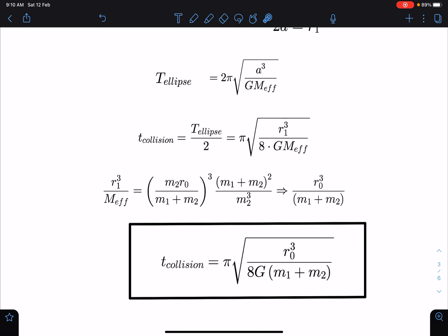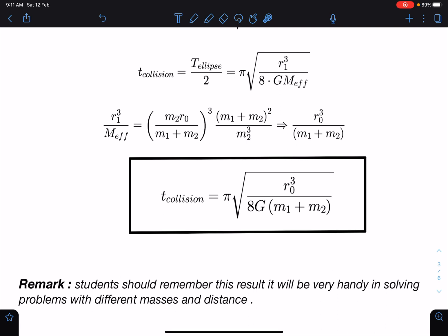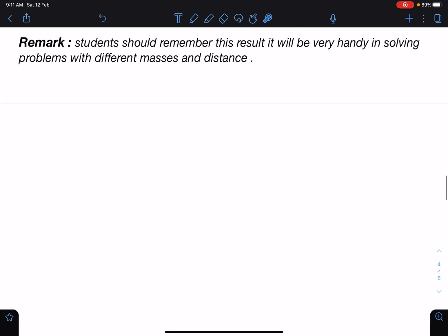t collision as π times the square root of r0 cubed by 8G times (m1 plus m2), and this is going to be the final answer for this problem. I hope you have enjoyed this method. Here there is a remark also: the student should remember this result and it will be very handy in solving problems with different masses and different distances combination. If you remember this formula, very quickly you can jump to those problems and write the answer.